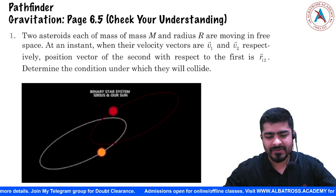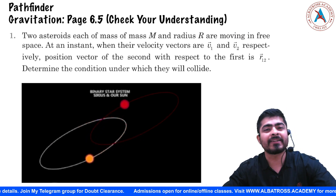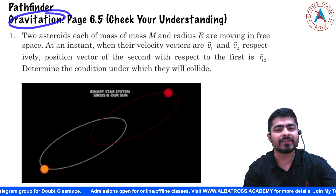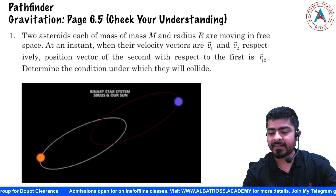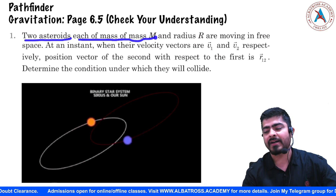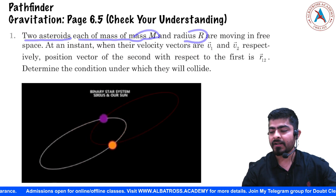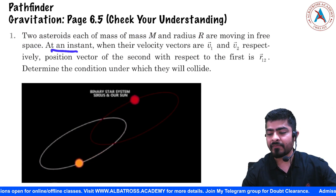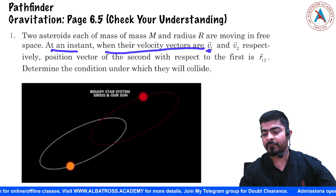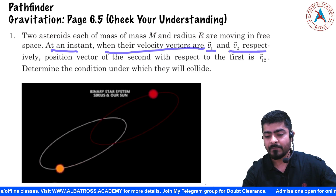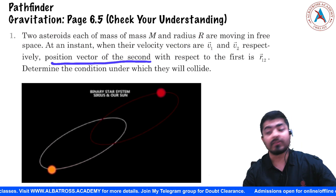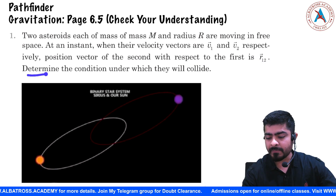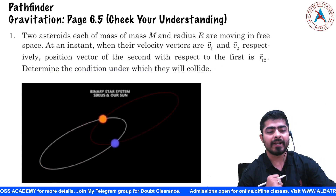Hello kids, how are you? So here I got another very good question from Pathfinder, it's from the chapter Gravitation. The question says that there are two asteroids each of mass m and radius r moving in free space. At an instant when their velocity vectors are v1 and v2 respectively, the position vector of the second with respect to the first is r12 vector. Determine the condition under which they will collide.